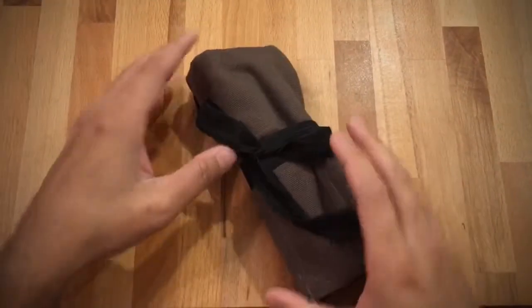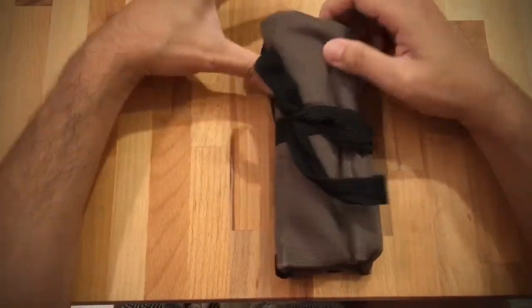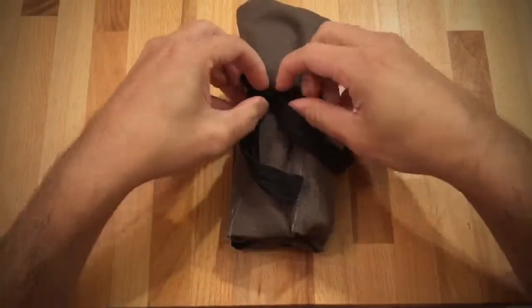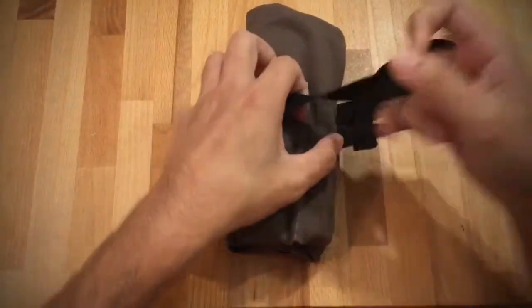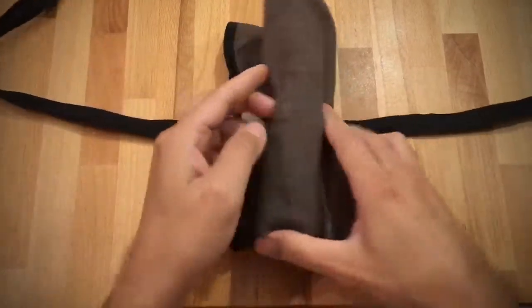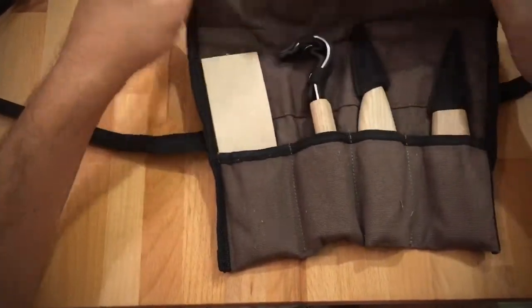So today we are reviewing a starter kit for wood carving. This kit is good for carving out spoons or katsukas, which are drinking cups. The company that manufactures this is called ACVCY.